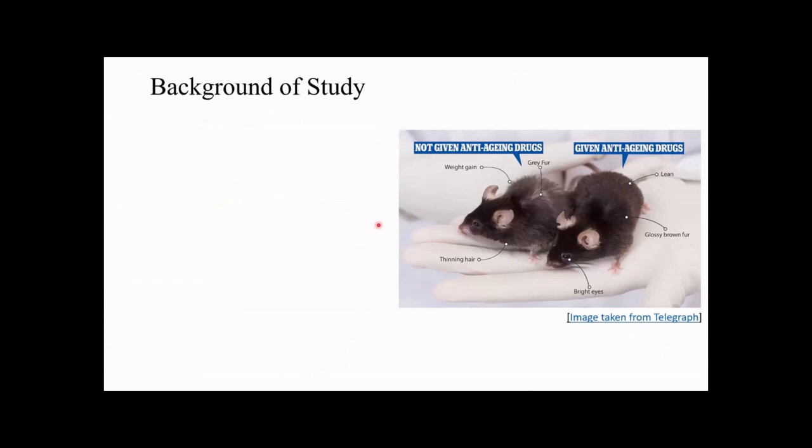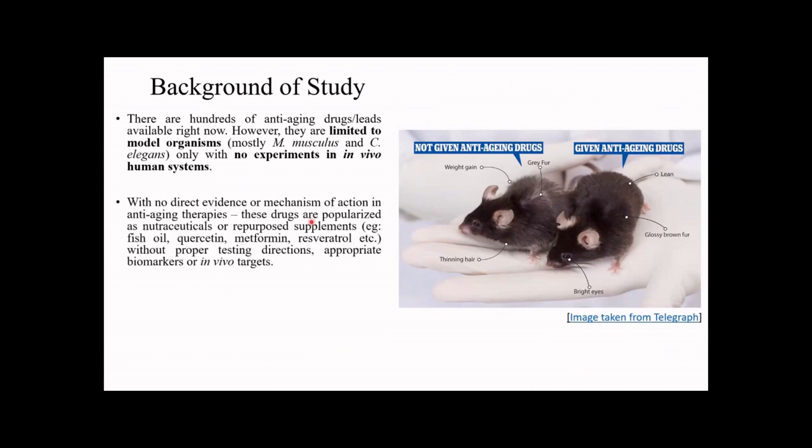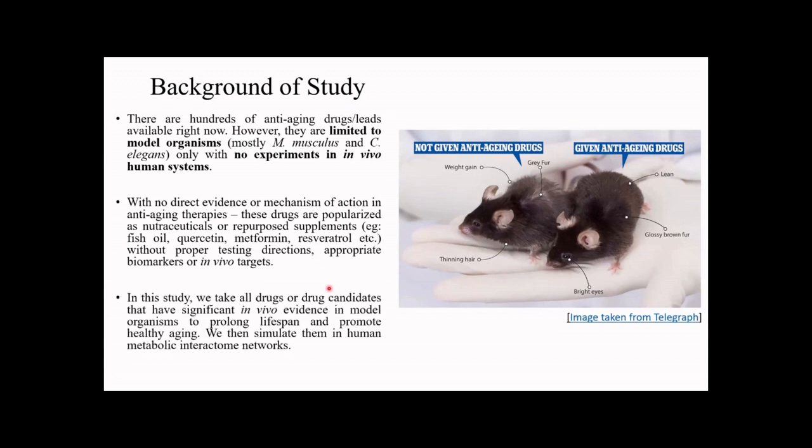Anti-aging drugs and senolytics are anything but a new concept in biogerontology and have notably increased in numbers in the past few years. However, these studies are mostly limited to mice and other mortal organisms with no direct evidence of mechanism of action. These anti-aging therapies are mostly available as nutraceuticals or repurposed supplements from other aging-associated disorders such as cardiovascular disease or type 2 diabetes. The current study addresses this gap by taking drug candidates with significant in vivo evidence in mortal organisms and evaluating their potential to transplant these activities into human systems.